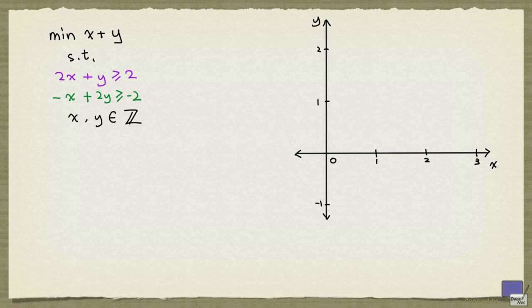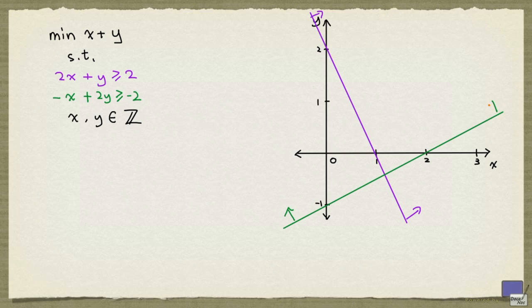The first constraint looks like this. And the second constraint looks like this. So the feasible region for the linear programming relaxation is this shaded area here.